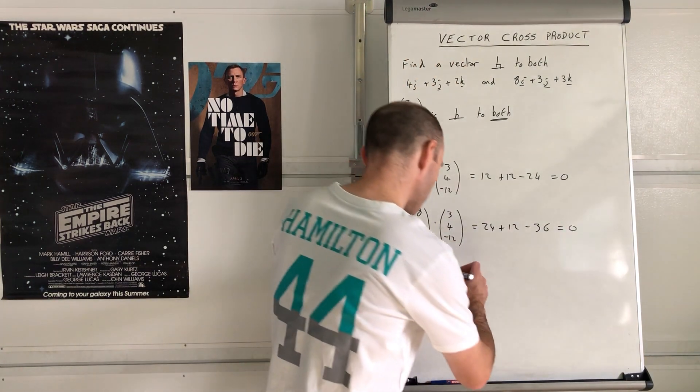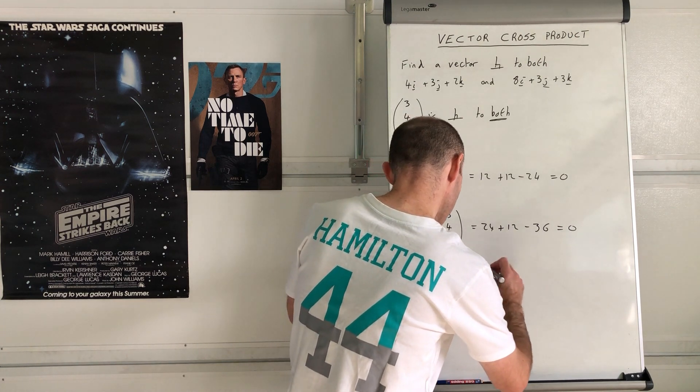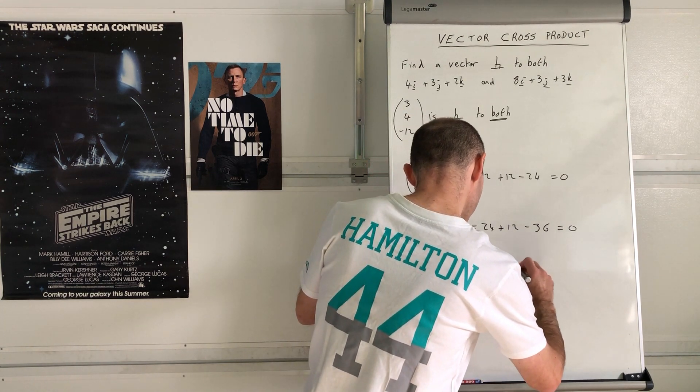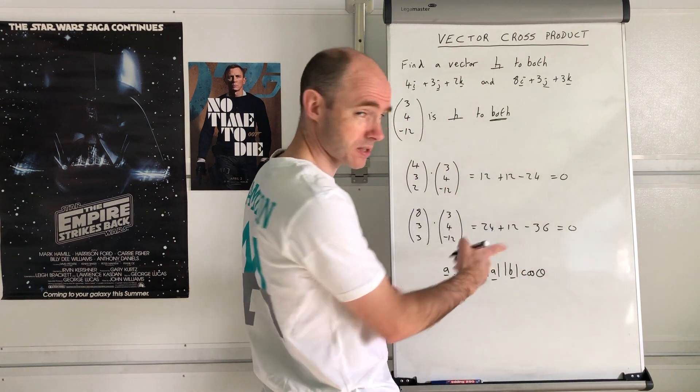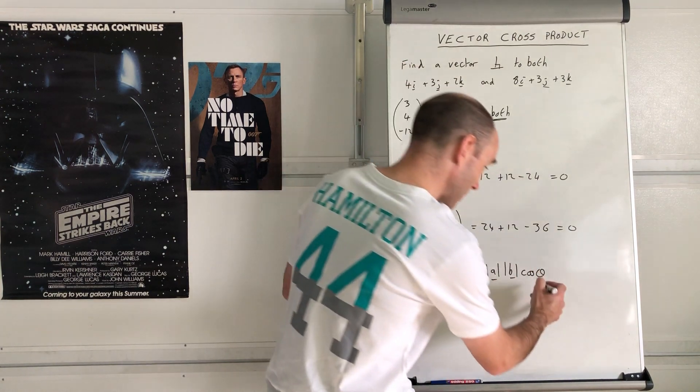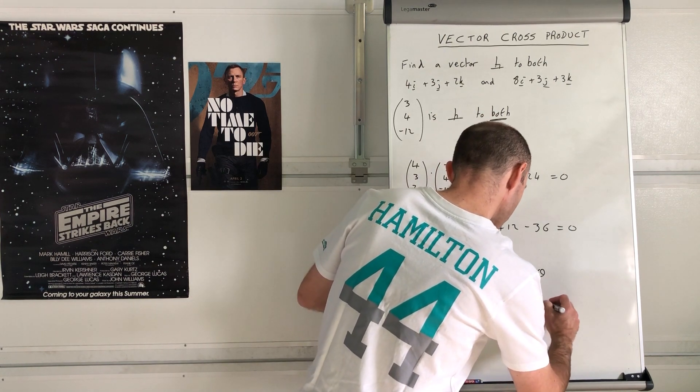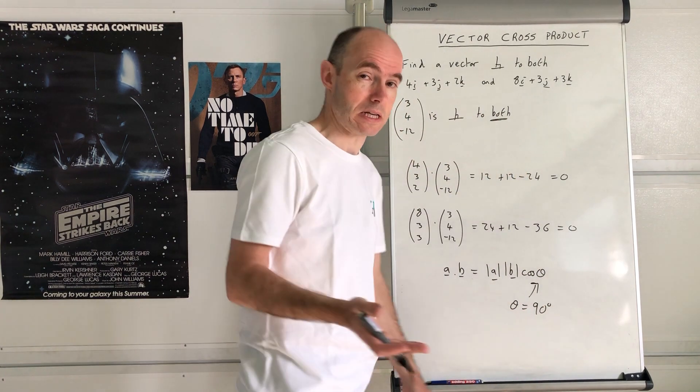They're both 0, which is what we hoped for. Why is that? Because the scalar product a dot b equals mod a mod b cosine theta, and if that equals 0...